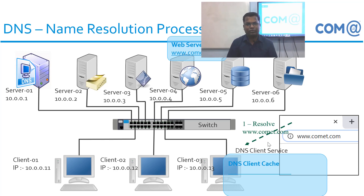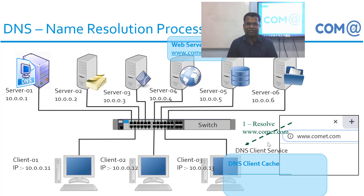Assume this is the first time we are trying to access www.common.com from this computer, so this name will not be available in the cache. Whenever a name resolution request is given to the DNS Client Service from any application, the DNS Client Service first looks into its cache. If the name is available in the cache, the IP address is given to the requesting application. But in this case, since it's the first access, the DNS Client Cache will not have the requested name or its IP information.